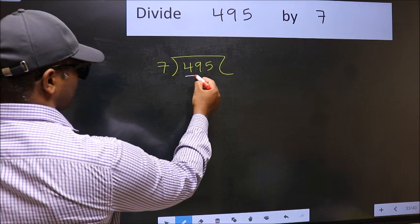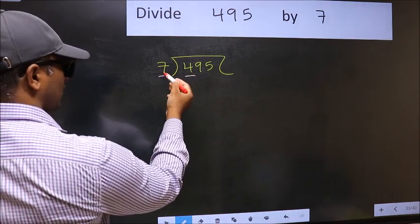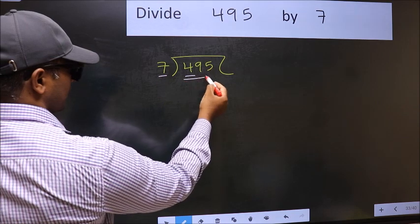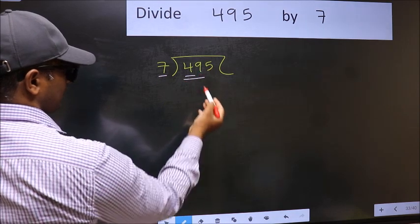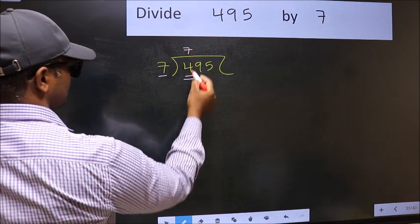Here we have 4 and here 7. 4 is smaller than 7, so we should take two numbers, 49. When do we get 49 in 7 table? 7 sevens 49.